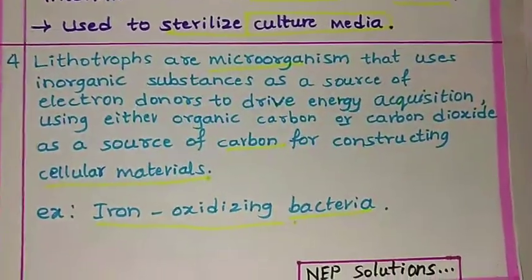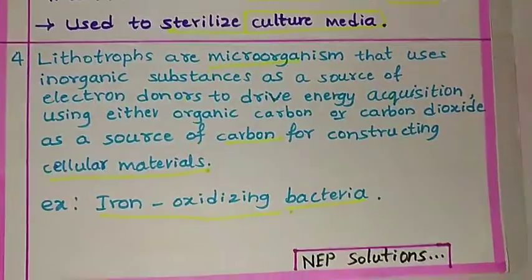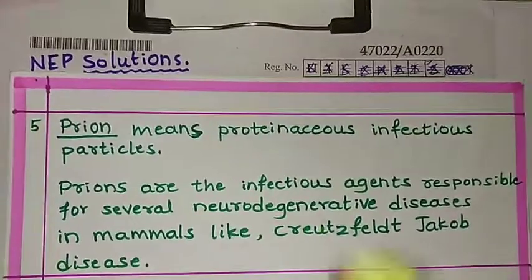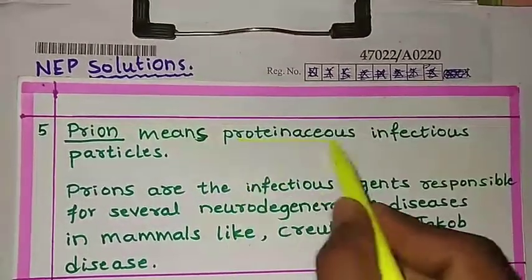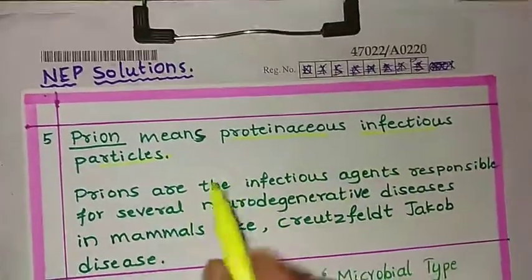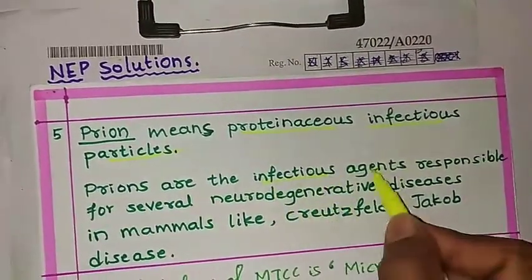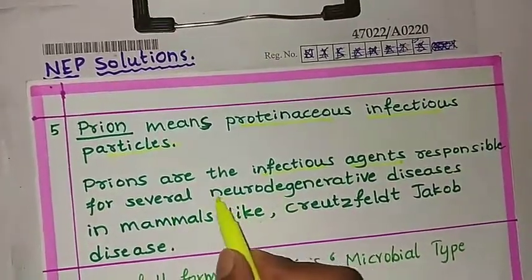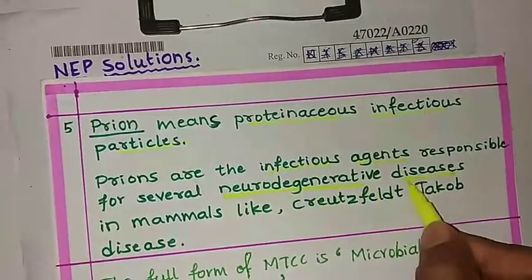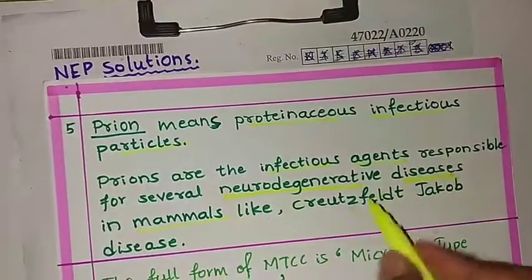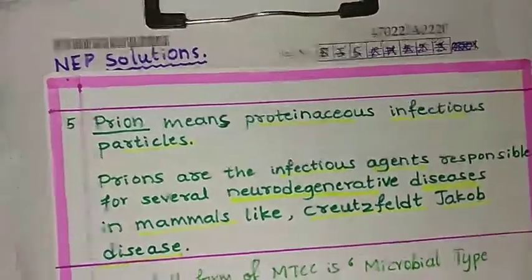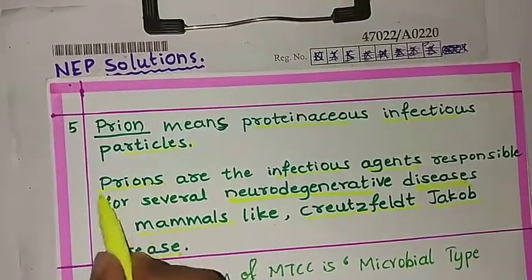The next question, the fifth, is about prions. Prions means proteinaceous infectious particles. Prions are infectious agents responsible for several neurodegenerative diseases in mammals, such as Creutzfeldt-Jakob disease.